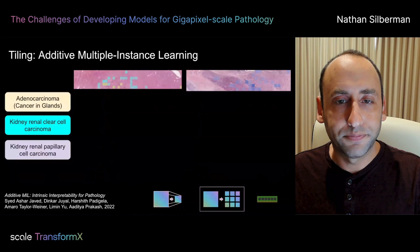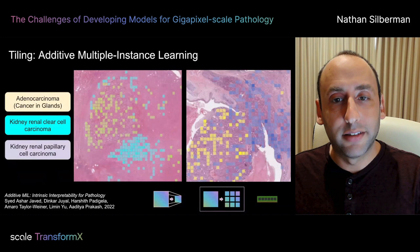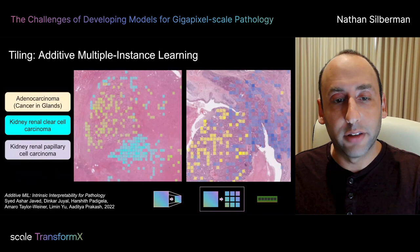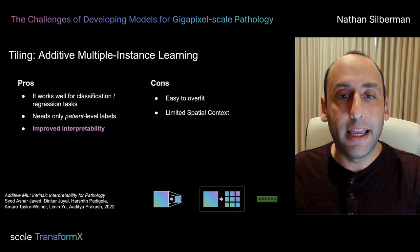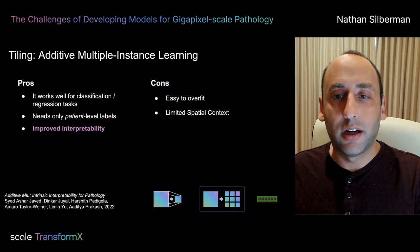Furthermore, because additive MIL has a different weight per class, we can very easily interpret what the model is fixated on for each one of the classes in our problem. What you're seeing here are parts of much larger slides which illustrate the degree to which additive MIL can clearly attend to different parts of the image for different classes. Overall, additive MIL works very well empirically and improves on the interpretability of alternative approaches.